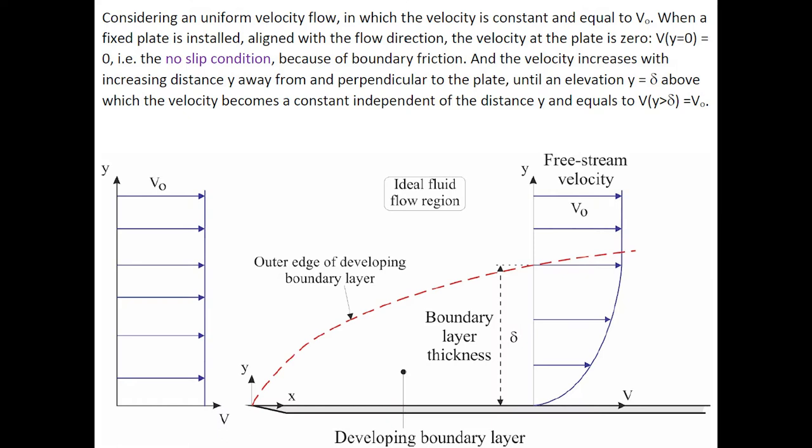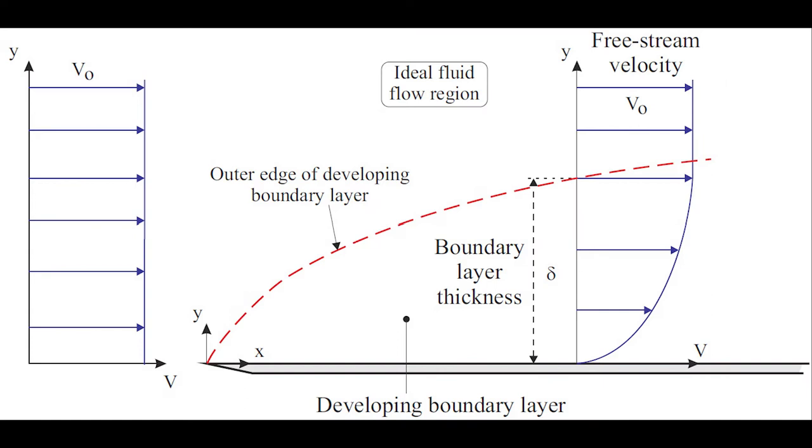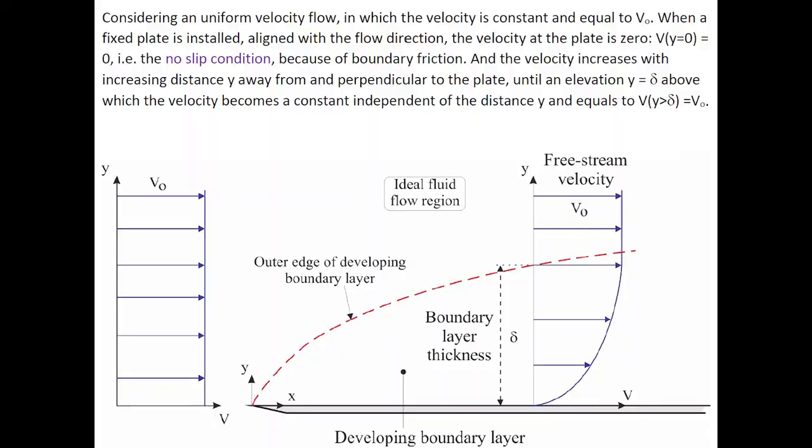Considering a uniform velocity flow in which velocity is constant and equal to V0, when a fixed plate is installed aligned with the flow direction, the velocity at the plate is zero. This is the no-slip condition because of boundary friction.